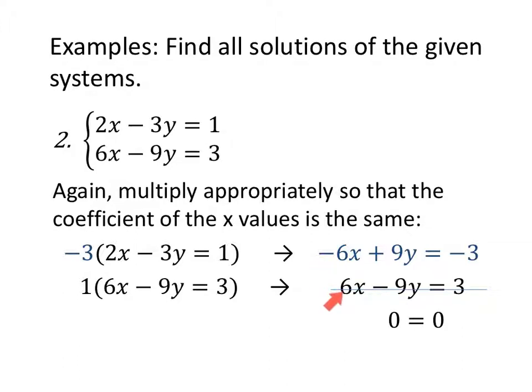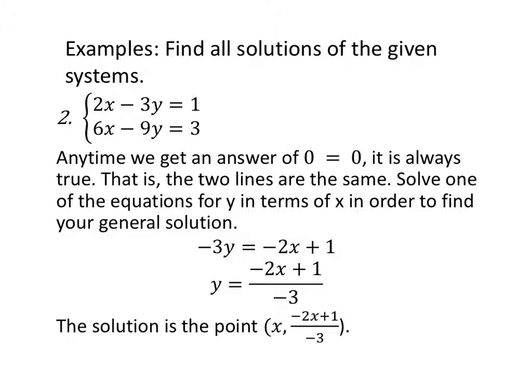But notice, negative 6x plus 6x, they cancel out. Positive 9y, negative 9y, they cancel out. I end up with nothing or 0 on the left-hand side. Then I have my equal sign. Negative 3 plus 3 is also 0. So I end up with 0 equals 0, which is always true. Anytime we have a system where it is always true, it tells me that these two lines are the same. Solve one of the equations for y in terms of x in order to find our general solution. So in this top equation, I subtract 2x from both sides. Divide by negative 3. Too lazy to even simplify the negatives because at this point, I'm disappointed I didn't find an actual answer that has numbers. This is an answer. This is a valid answer, but it's not a satisfying answer. The solution to the point is then for whatever x you give me, these are the instructions on how I find y. It's a dependent system, so it depends on the choice of x.